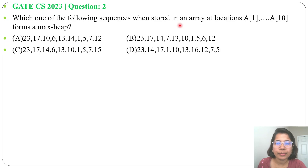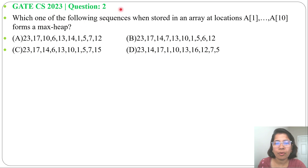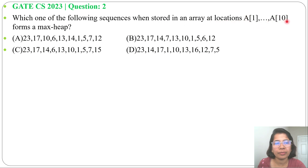Let's solve a previous question on algorithms. This question was asked in GATE CS 2023, question number 2: which one of the following sequences, when stored in an array at locations A[1] to A[10], forms a max-heap? Four options are given.